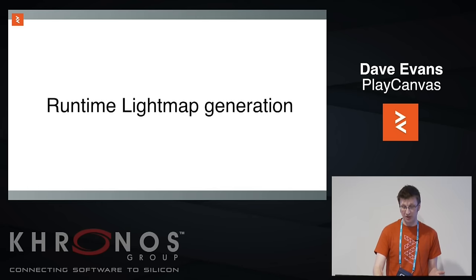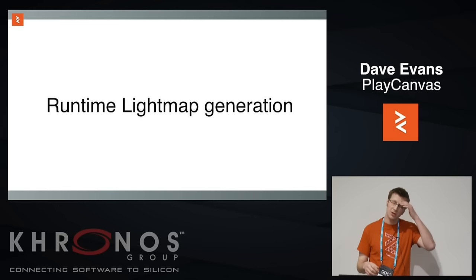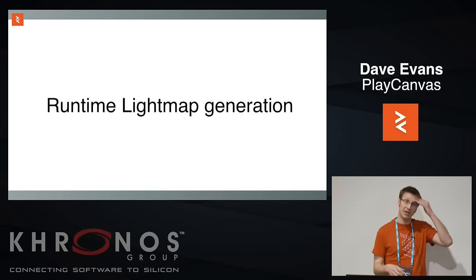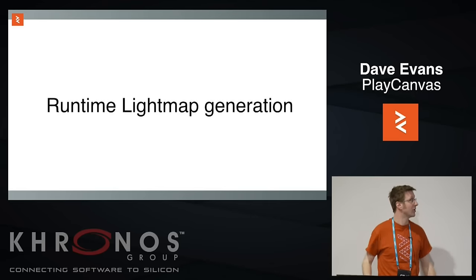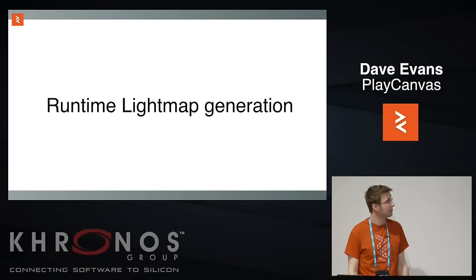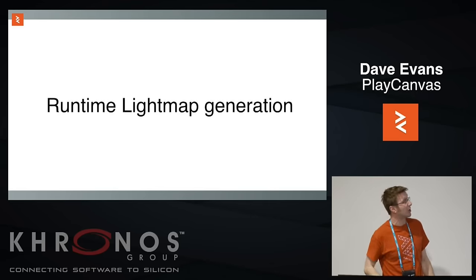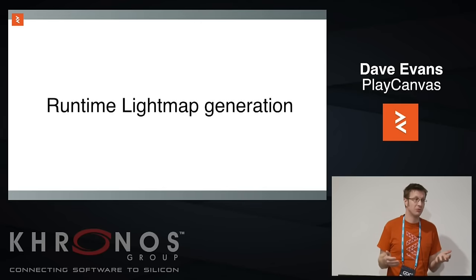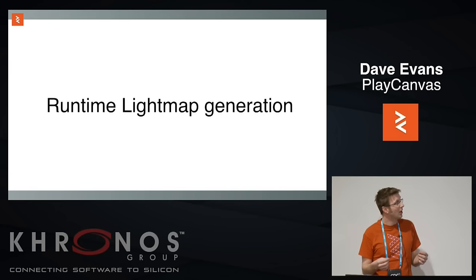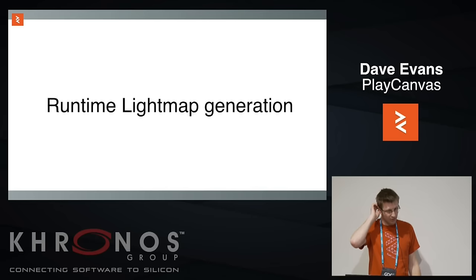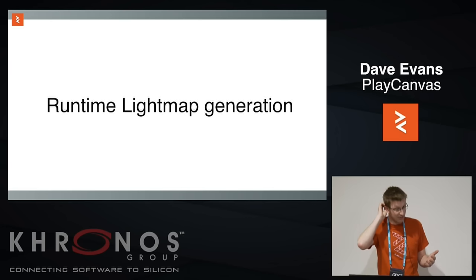The new feature coming out this week is runtime light map generation. The first thing a new user does in PlayCanvas is load it up and stick in 100 lights, then wonder why it doesn't work — because you can't do deferred rendering easily in WebGL 1. We were trying to work out a good solution to get around that, and what we came up with is runtime light map generation.